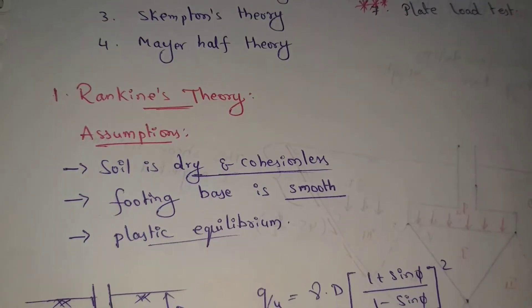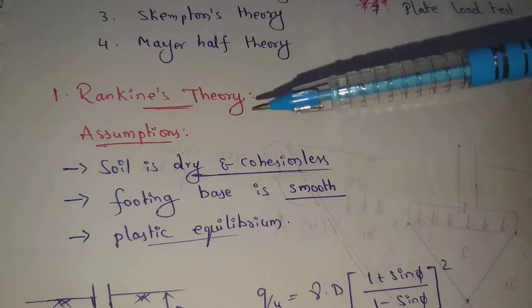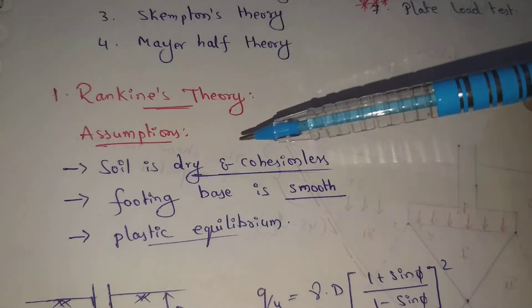This Rankine's theory has some assumptions. The assumptions is that soil is dry and cohesionless. If we show this soil, the soil is dry and cohesionless.